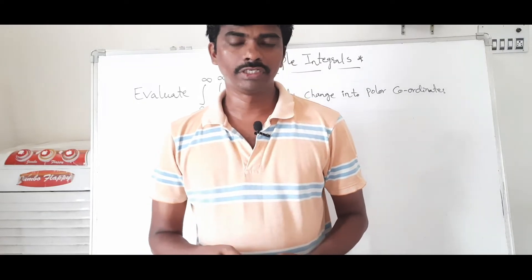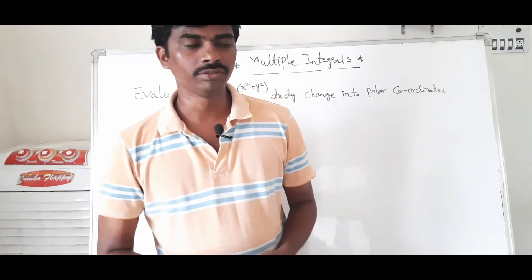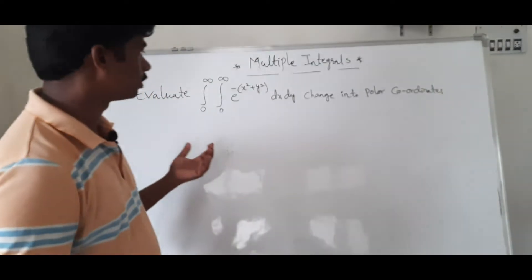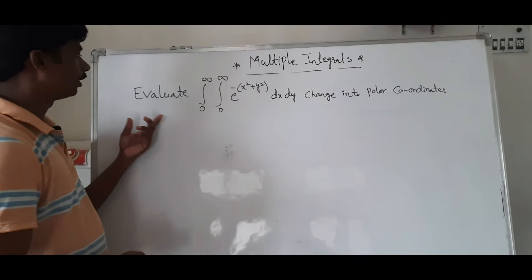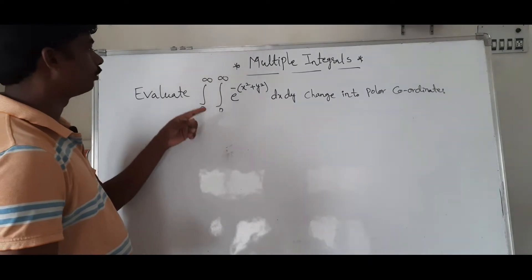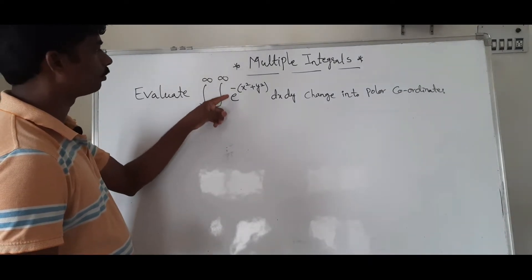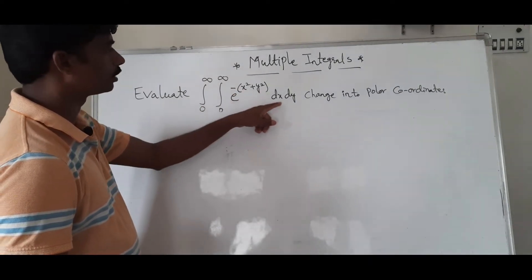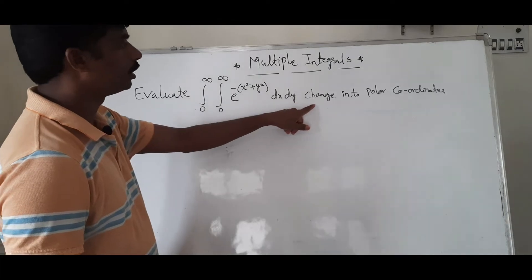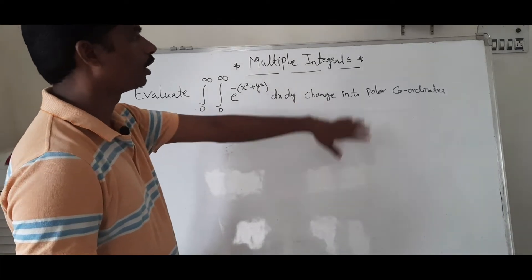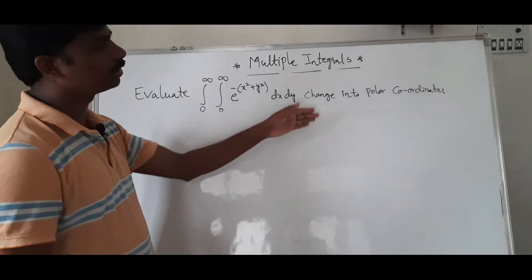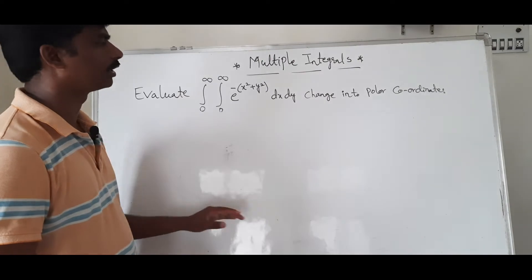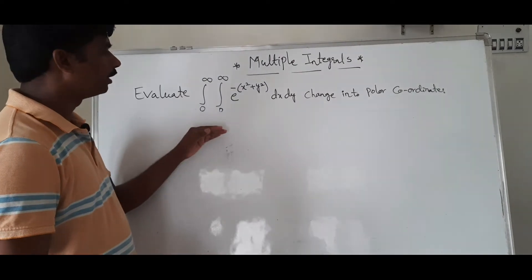Hi viewers, welcome to Rajashtrakalu. Today our topic is multiple integrals. Evaluate the integral from 0 to infinity, integral from 0 to infinity, of e to the power of minus (x² + y²) dx dy. We are going to solve this problem by changing into polar coordinates.